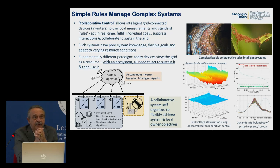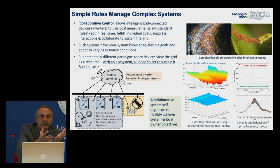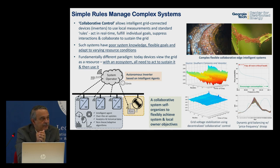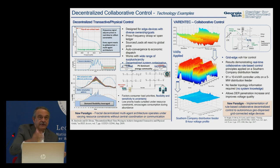These systems need core system knowledge, flexible goals, and ability to adapt to varying resource conditions. We've implemented this in multiple cases — including Variantech on the right, which has been in production a long time: a completely decentralized control concept doing volt-VAR compensation on feeders with 100 units collaborating together to create voltage profiles. We've also worked on a transactive physical control layer marrying economics with the physics of operation.